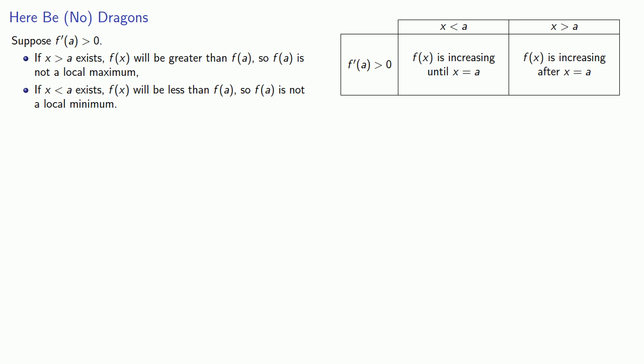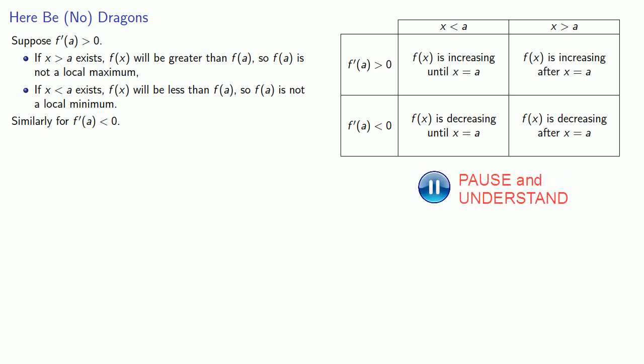And a similar thing happens if our derivative at a is less than zero. Then I know that f(x) is decreasing, both until I get to a and after I pass through a. And so this leads to the following result.